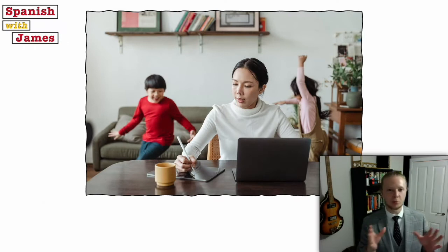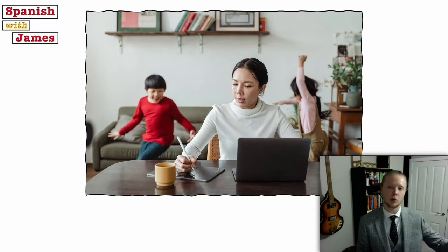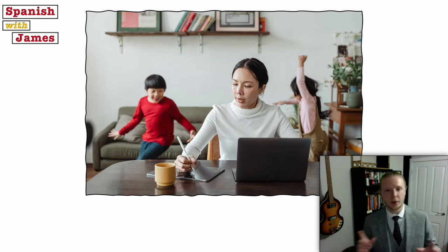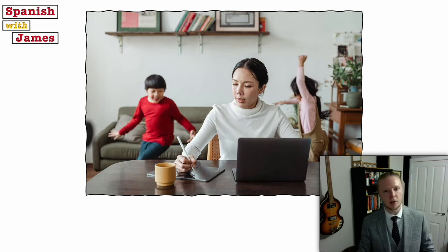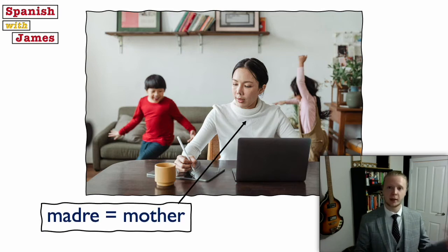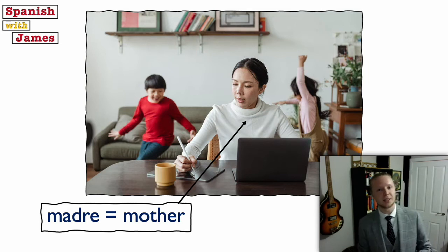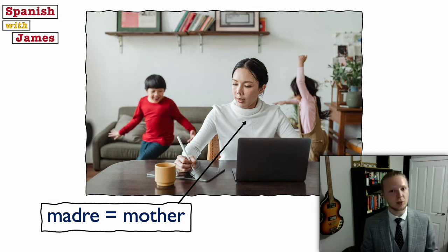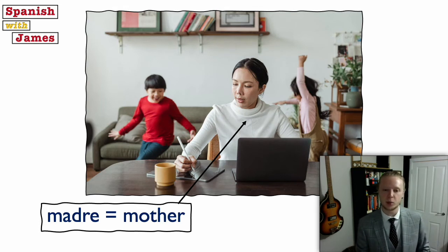Mother and father don't follow that O-changes-to-A pattern that the rest do, but they do have a pattern. Mother is madre — so hopefully you've noticed: padre, father; madre, mother. We're just changing the P for an M, so they rhyme. There is still a pattern between these two words. And similarly to papá, we've also got mamá.